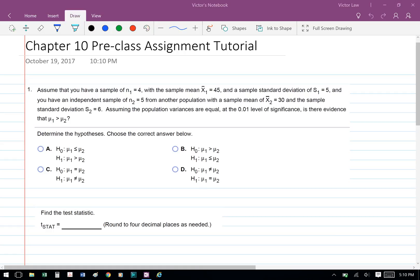This is the Chapter 10 pre-class assignment tutorial, question 1. Assume that you have a sample of n1 equals 4 with sample mean x1 equals 45, and a sample standard deviation of s1 equals 5, and you have an independent sample of n2 equals 5 from another population with a sample mean of x2 equals 30, and a sample standard deviation of s2 equals 6. Assuming the population variances are equal at the 0.01 level of significance, is there evidence that mu1 is greater than mu2?